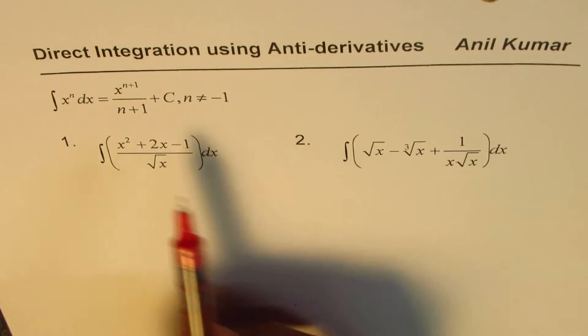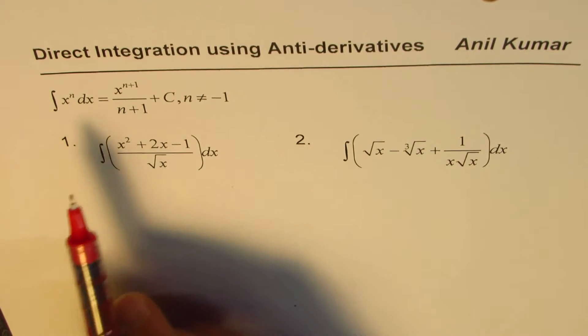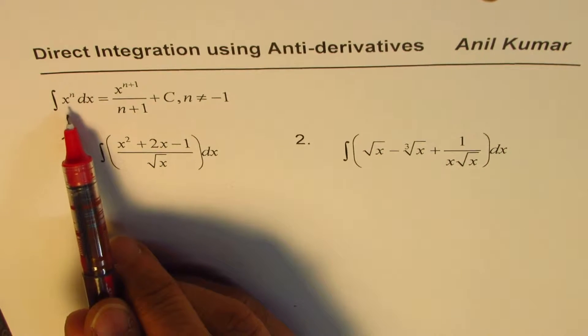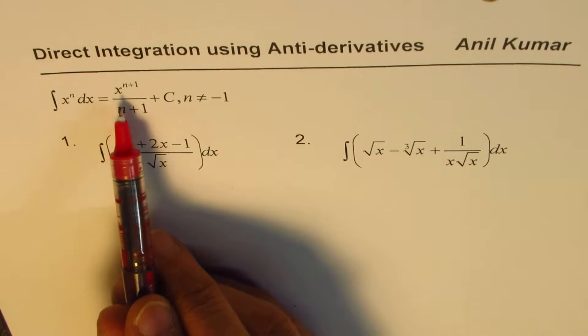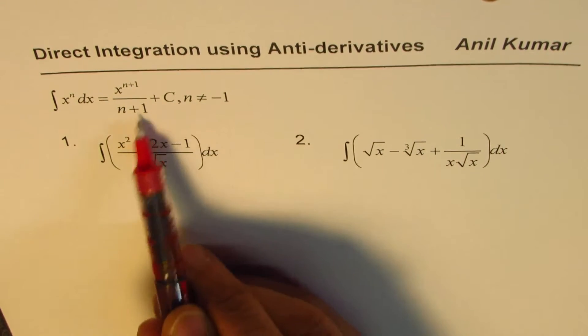So the one which we are using here is kind of power function. So let's apply this formula. The integral of x to the power of n dx is x to the power of n plus 1 divided by n plus 1 plus c, but n cannot be minus 1.